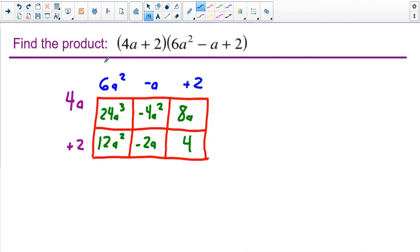And then just bring everything else down. So the 24A to the third, there's nothing there to combine. But these, I can combine 12 minus 4. That's going to give me 8A squared. Over here, 8A minus 2A, that's going to be 6A. And the 4 is just a 4.